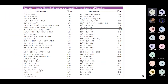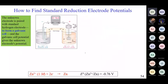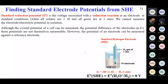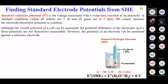Where do we get the E values from? Standard reduction potentials — E-naught — are given to us, but I want you to know where they come from. E-naught is the voltage associated with a reduction reaction at an electrode at standard conditions, where all solutes are one molar and gases are at one atmosphere. We cannot measure electrode potential in isolation — I need another couple with it to have any movement of electrons.